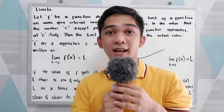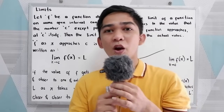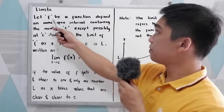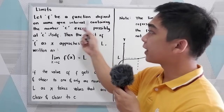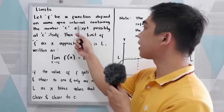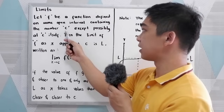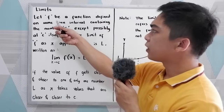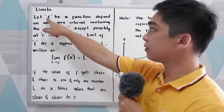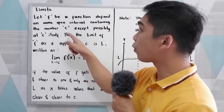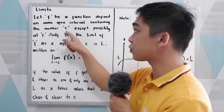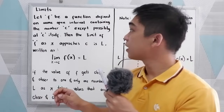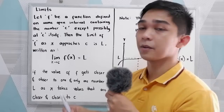Good day everyone. Today I will be discussing limits. Let f be a function defined on some open interval containing the number c, except possibly at c itself. We have here our function, then our c, where c refers to our constant. In other references, they use a or k to represent the constant.